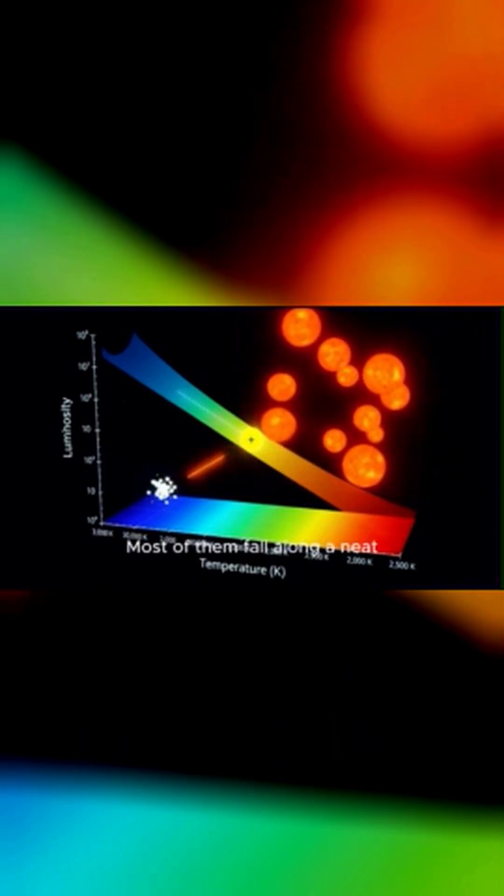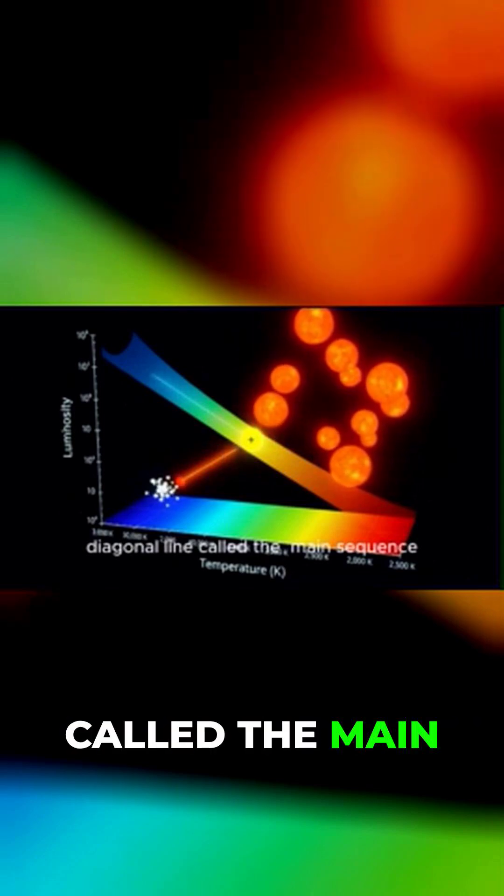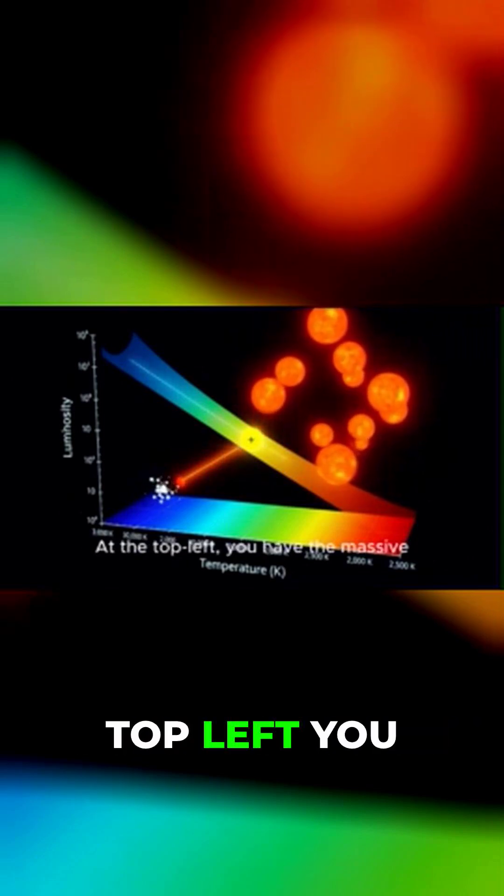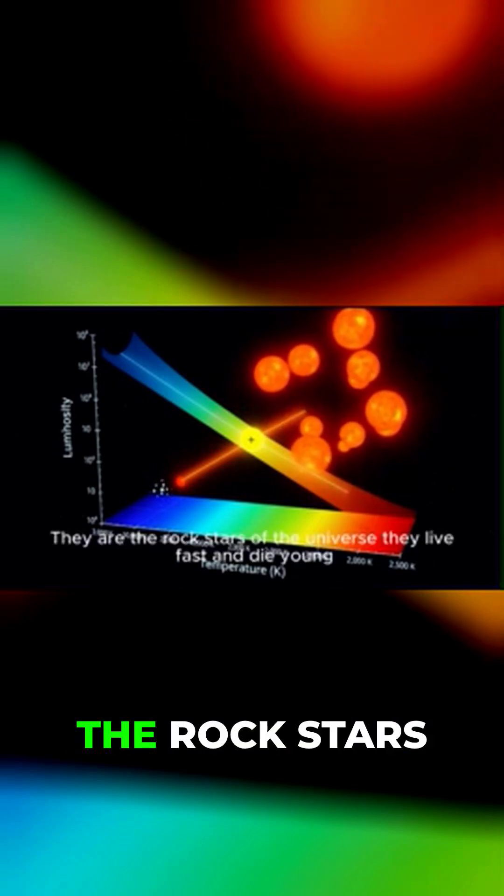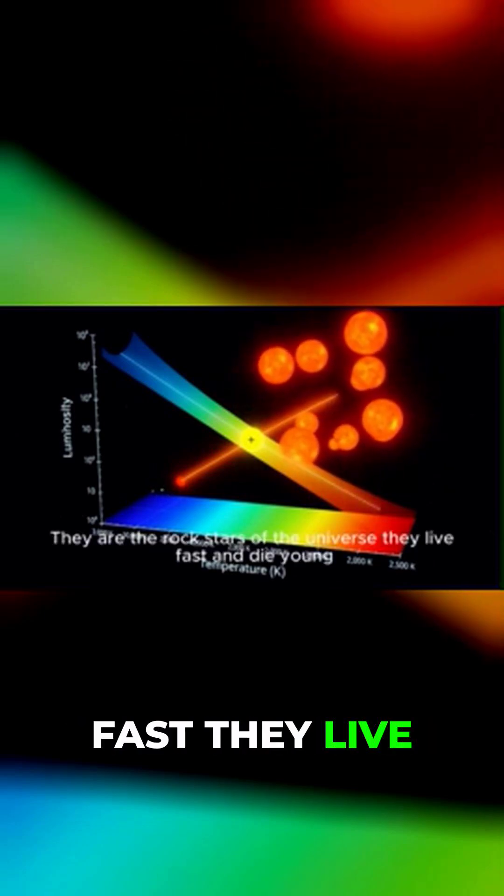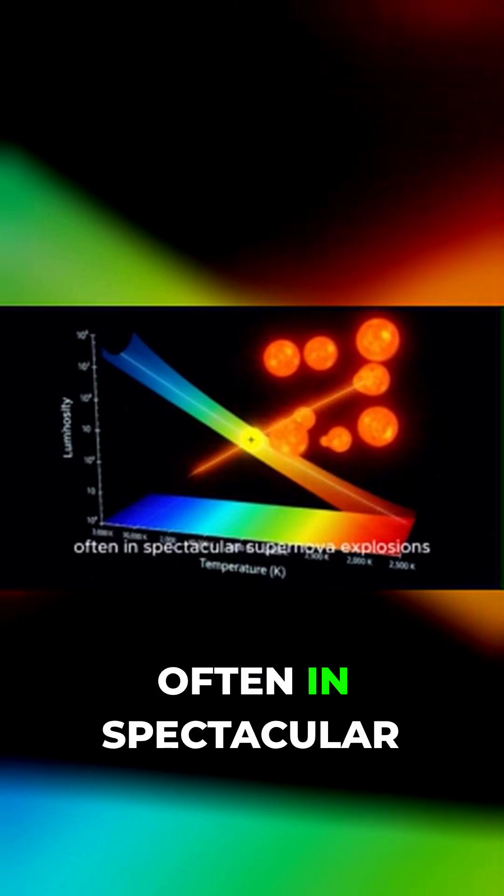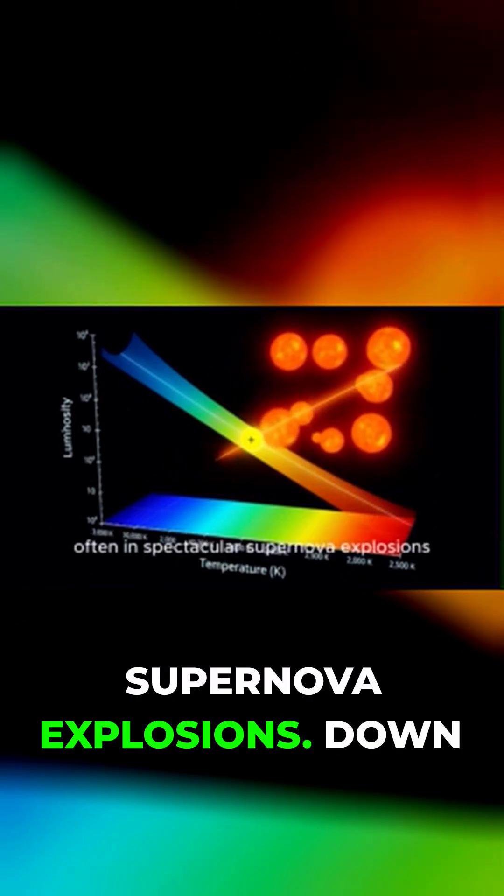Most of them fall along a neat diagonal line called the main sequence. At the top left, you have the massive, hot, bright blue stars. They are the rock stars of the universe. They live fast and die young, often in spectacular supernova explosions.